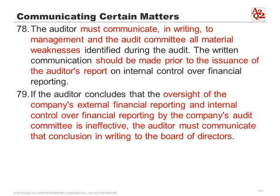Paragraph 79 is really something hard for external auditors to do: if they conclude that oversight of the company's financial reporting by the audit committee itself is inadequate — the audit committee is not doing its job — the auditor has to communicate this in writing to the entire board of directors. That's a difficult situation. How many times does an auditor want to say, 'Part of your board isn't doing its job'? It's so rare. The only time I see this is in big blow-ups like Enron and WorldCom, where auditors are doing their CYA.